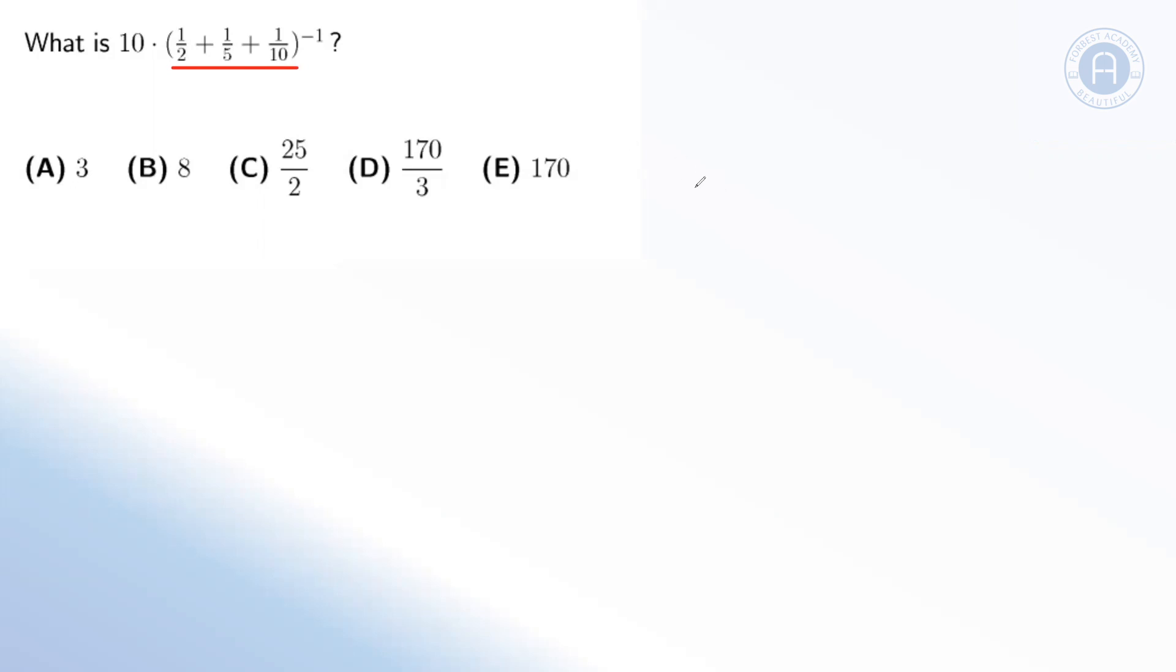So the equivalent fraction for 1/2 will be 5/10. The equivalent fraction for 1/5 will be 2/10. And of course, 1/10 can remain as it is at 1/10. Adding those together, our denominator will stay the same. We add together the numerators to get 8/10.